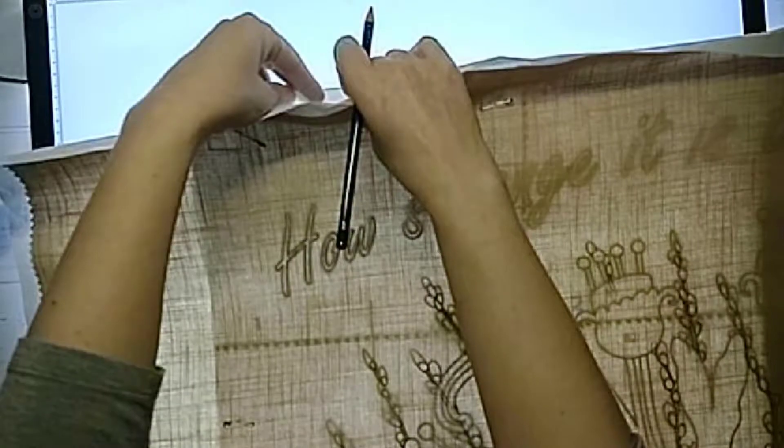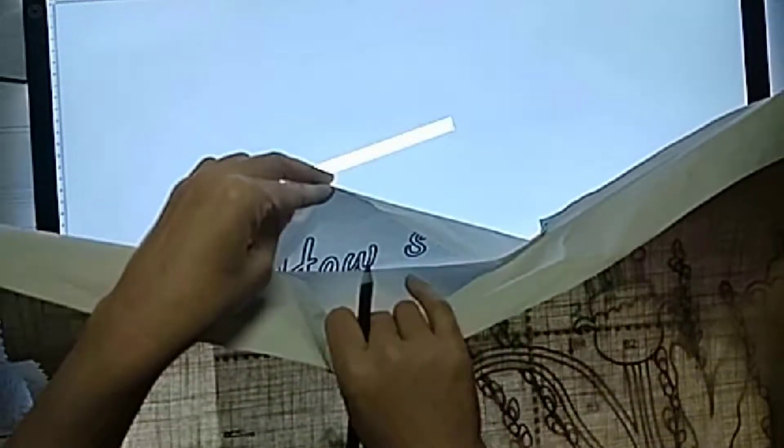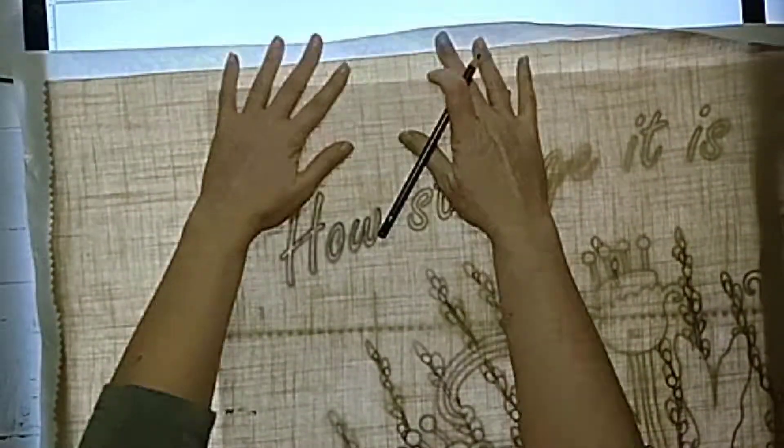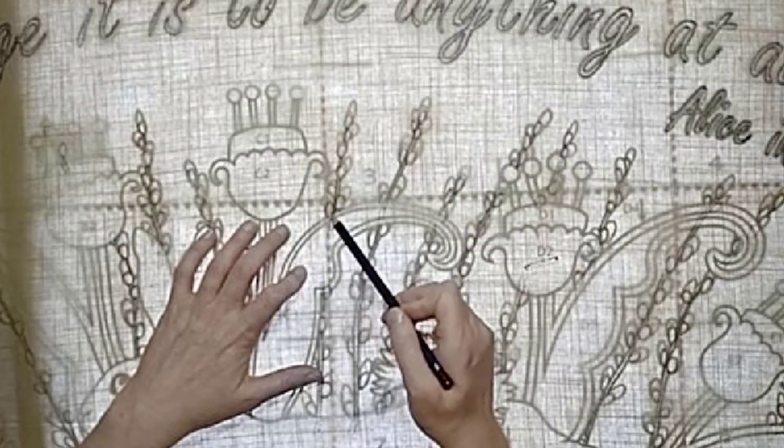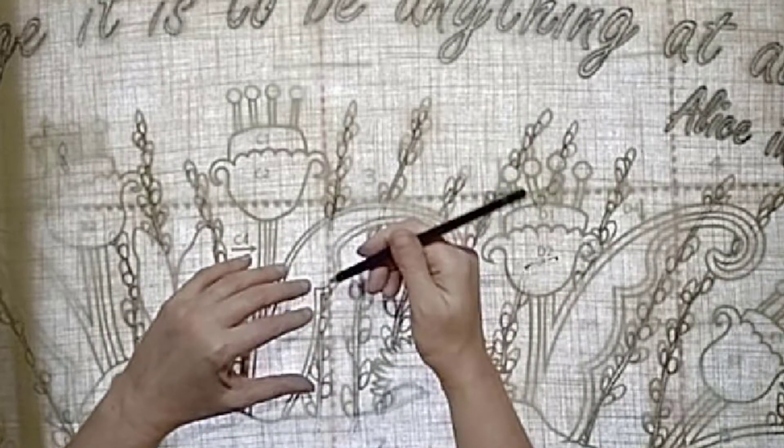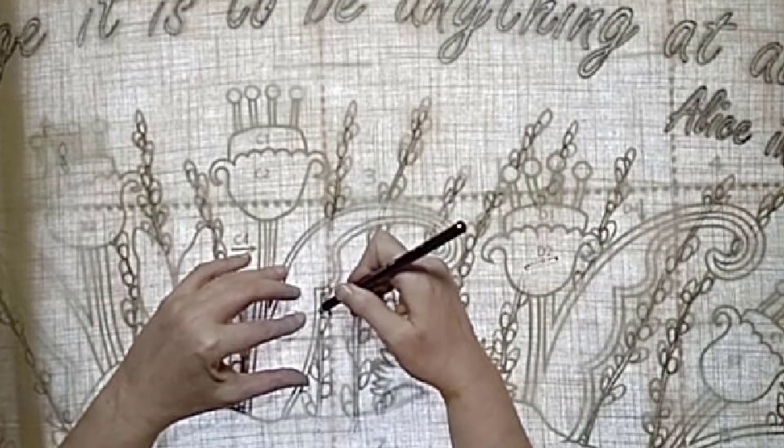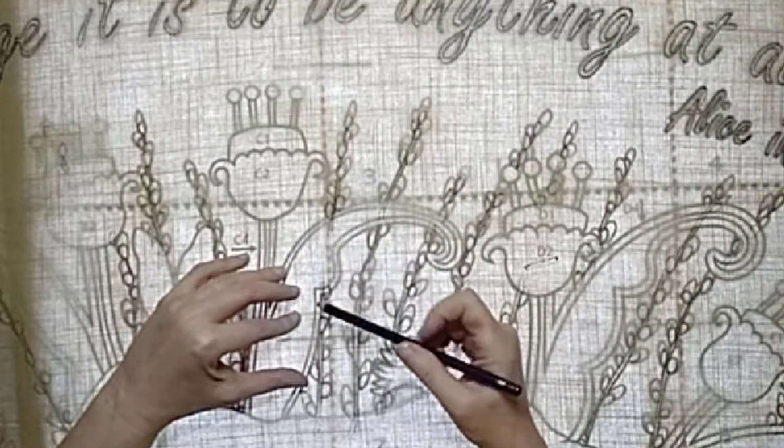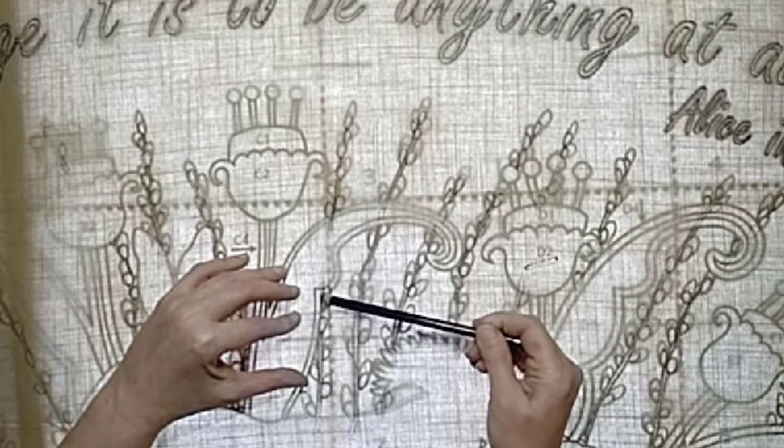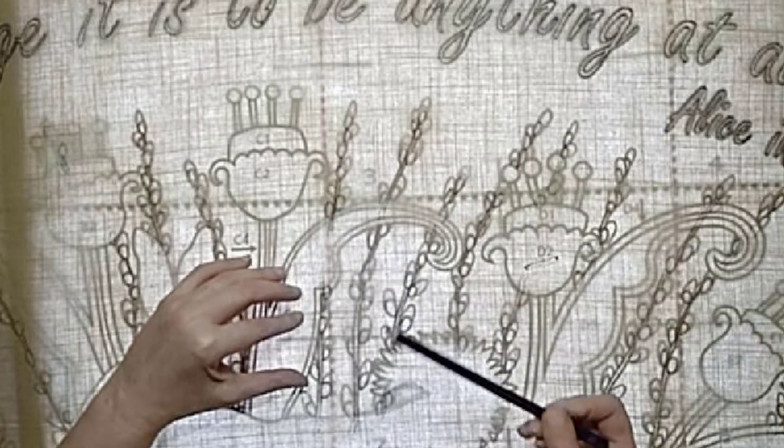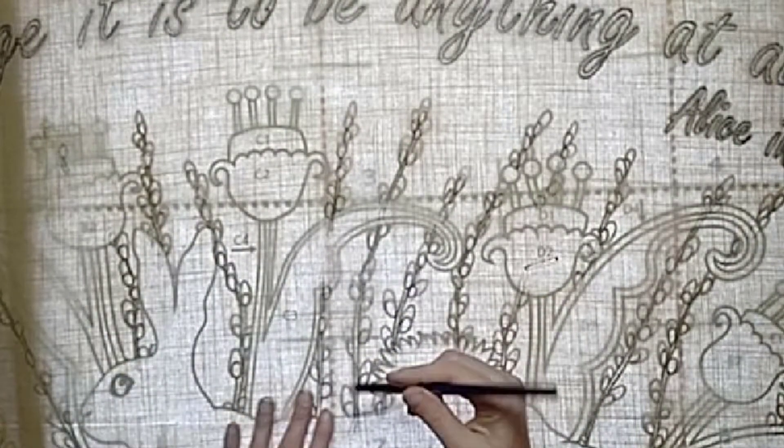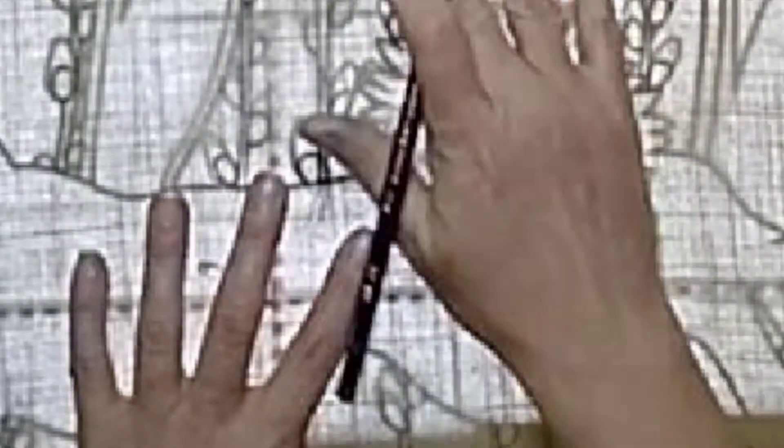Just to note, when you're creating your applique pieces, they might ultimately differ slightly in size and shape from the original pattern. When you're tracing onto your fabric, the fabric can warp and move a bit, and that ends up making things a slightly different size from each other.